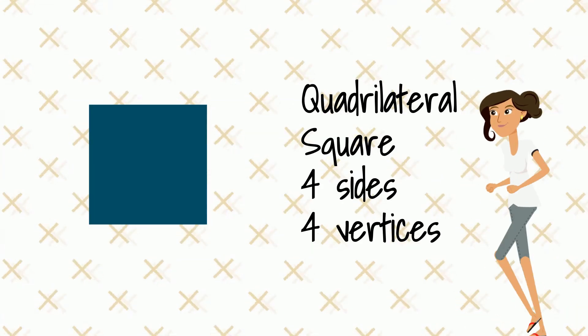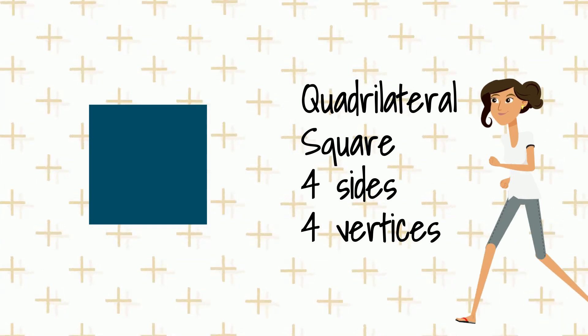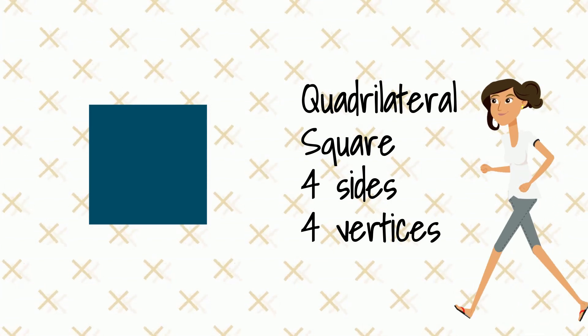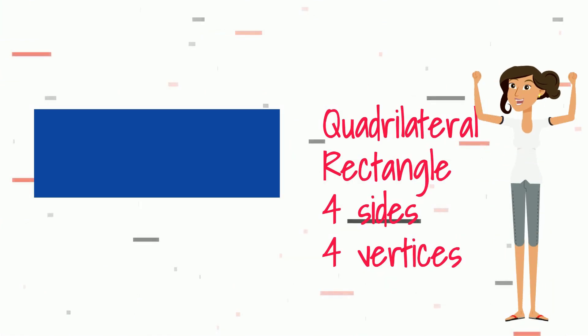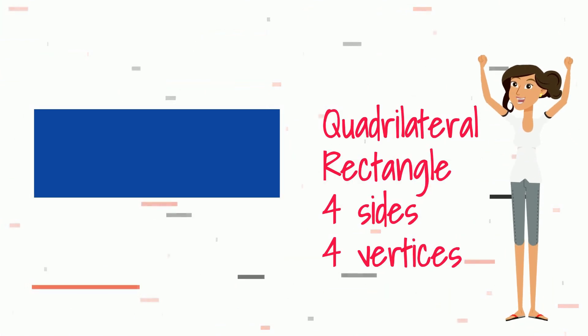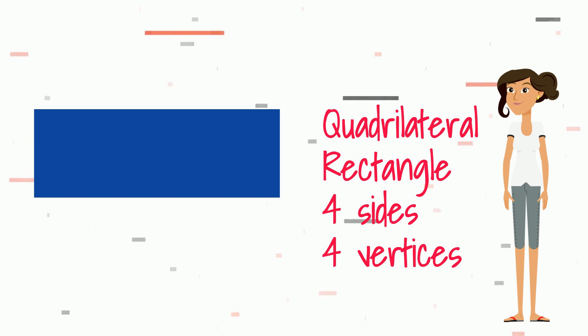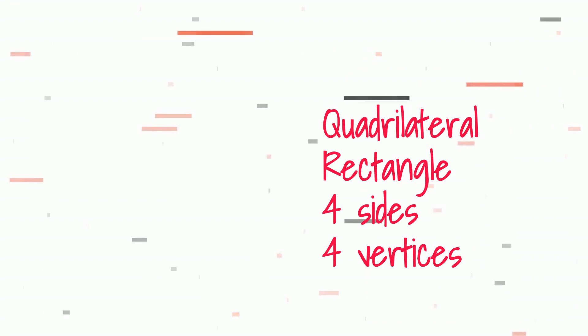Now let's name these polygons. This one is a square — it's a quadrilateral, it has four sides and four vertices. This is a rectangle — another quadrilateral that has four sides and four vertices.